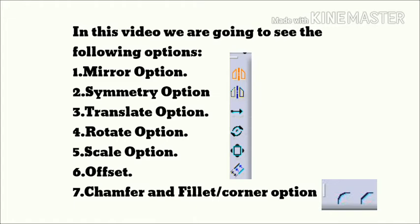The translate option can be copied also. The fourth one is the rotate option — it is used for circular objects and you can rotate your part to a particular angle. The fifth scale option allows you to reduce or increase the size of the object.